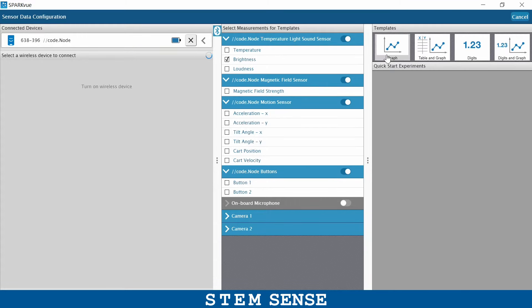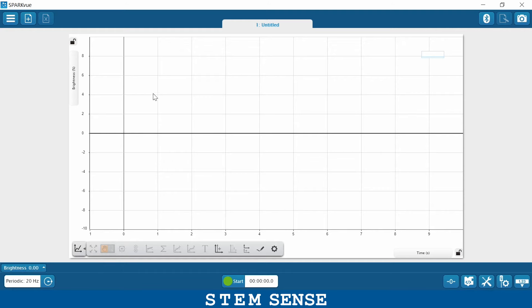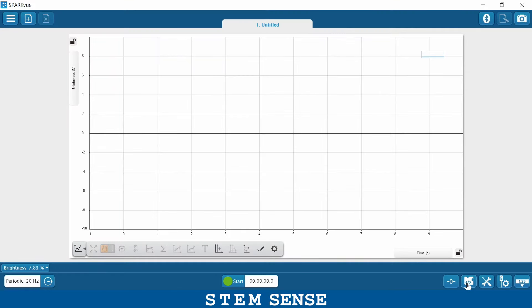All right, so the first thing I did is I connected my code node to SparkView, and I'm going to choose just the graph display. It really doesn't matter for this piece. And I want to have a graph that shows brightness over time, but we're not even really going to use that here. You're going to go directly to the code icon that brings you into Blockly.